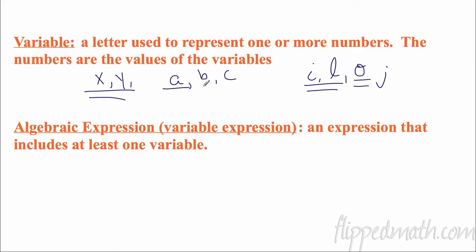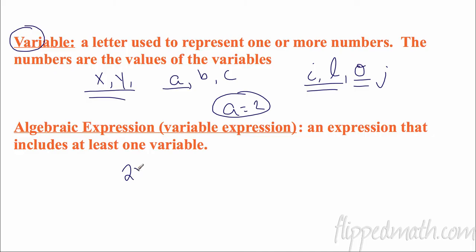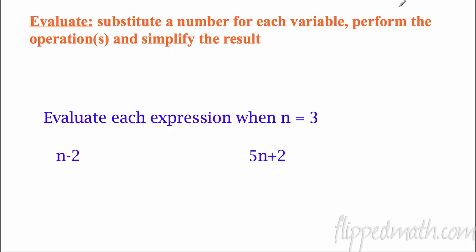Now you need to understand that if A is two in one problem, A is not always going to be two. It may be two this time, and then next time it could be seven. It's going to change — that's why it's called a variable. An algebraic expression, also known as a variable expression, is an expression that includes at least one variable. So we could have a number and a variable, or two plus Y — that is a variable expression because it includes at least one variable. Pause the video, copy this definition down, then unpause and get right to it.